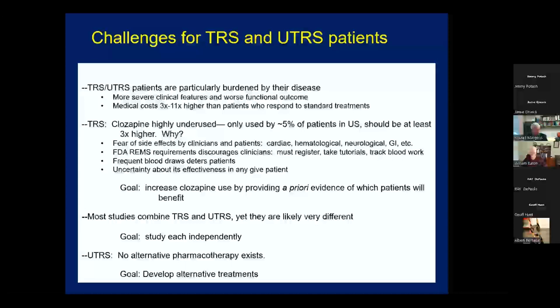The goal is to increase clozapine use by providing a priori evidence of which patients will benefit. Another issue is that most studies combine TRS and UTRS patients — those who do and don't respond to clozapine — yet these populations are likely different. An additional goal is to study each group independently to figure out the differences and begin tailoring treatments. For people who don't respond to clozapine, there really is no alternative pharmacotherapy — some benefit from electroconvulsive treatment, but no longstanding medicines appear consistently helpful. So the goal is to develop alternate treatments, requiring understanding of the pathophysiology of the disease.